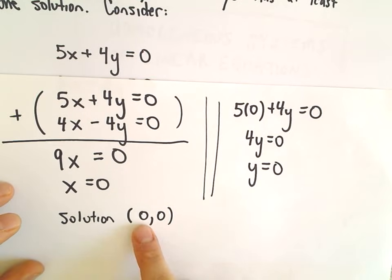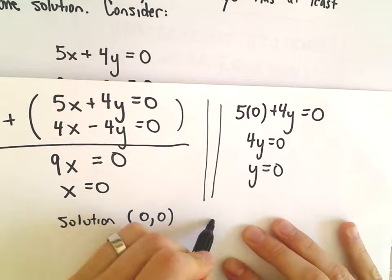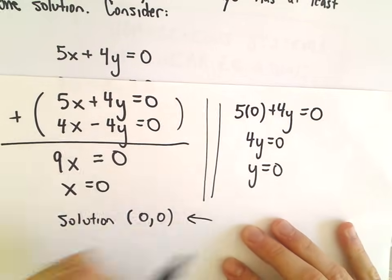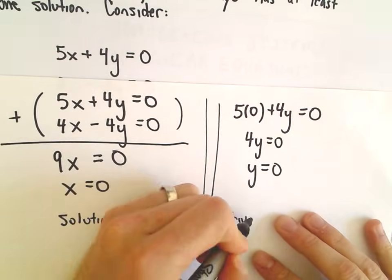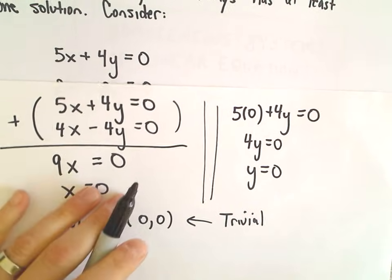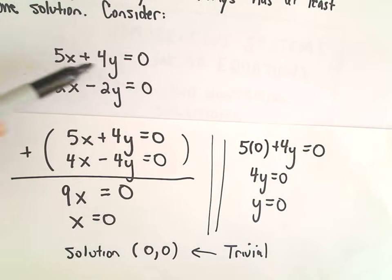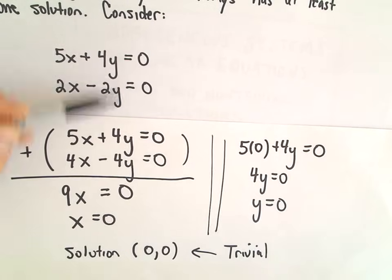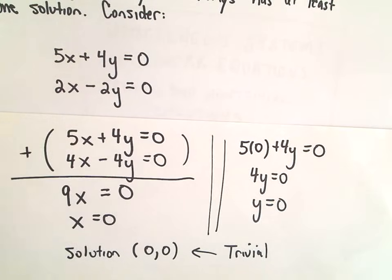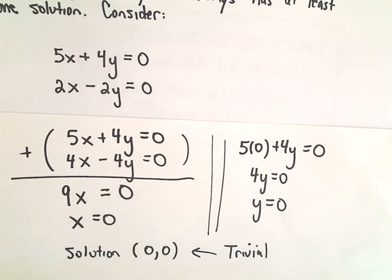The only solution is when both variables equal 0, and that's what's known as the trivial solution. It's kind of boring because it's obvious that if you plug 0 in for all the variables, everything's going to cancel out and you'll have a solution — kind of a boring solution in a sense.